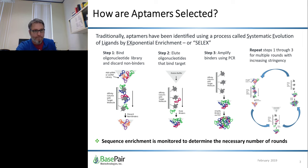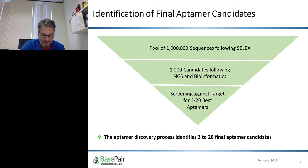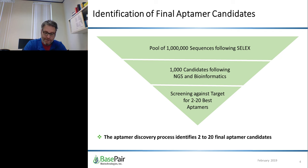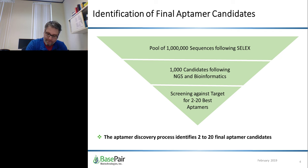Let's put some numbers around the larger workflow as typically performed at BasePair. We begin with some of the largest libraries we're aware of — libraries containing over 10 to the 15th candidate sequences, or a million billion different candidates. A SELEX strategy is performed under carefully defined conditions, and we use proprietary methods to monitor library diversity. By the end of SELEX, libraries typically converge to about a million unique sequences, representing a billion-fold reduction in sequence diversity. We then use bioinformatics to cluster those sequences down another three orders of magnitude to about a thousand candidates. For most targets such as peptides and proteins, we can then use DNA microarrays as a high-throughput screening tool to further narrow candidates to just tens.